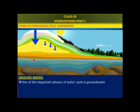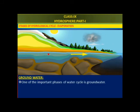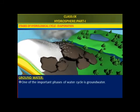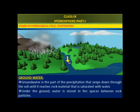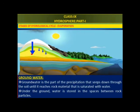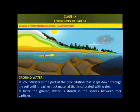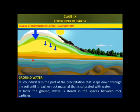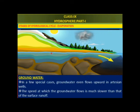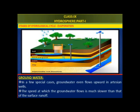One of the important pieces of the water cycle is groundwater. Groundwater is the part of the precipitation that seeps down through the soil until it reaches rock material that is saturated with water. Under the ground, water is stored in the space between rock particles. In a few special cases, groundwater even flows upward in artesian wells. The speed at which groundwater flows is much slower than that of the surface runoff.